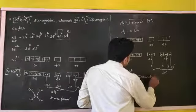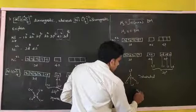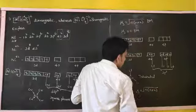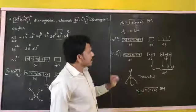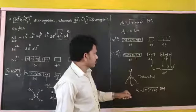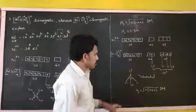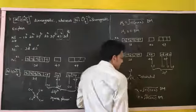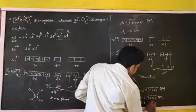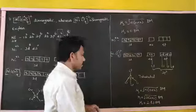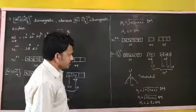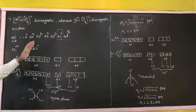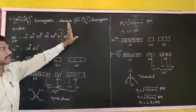Next we calculate μs (Bohr magneton value) using the formula √(n(n+2)). We check for unpaired electrons in the complex: there are 2 unpaired electrons. So μs = √(2×(2+2)) = √8 = 2.83 Bohr magnetons. This confirms [NiCl₄]²⁻ is paramagnetic. So [Ni(CN)₄]²⁻ is diamagnetic whereas [NiCl₄]²⁻ is paramagnetic.